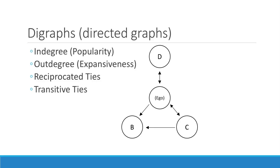In a directed graph, there are a few key terms. Indegree is the number of ties you receive — often referred to as popularity. If lots of people nominate you as a friend, you're popular. Out-degree is the number of ties you send to other people — that's expansiveness. A reciprocated tie is where two people nominate each other as friends, shown by arrows going both ways. And a transitive tie is one that closes a triangle between friends — if my friend's friend is also my friend.